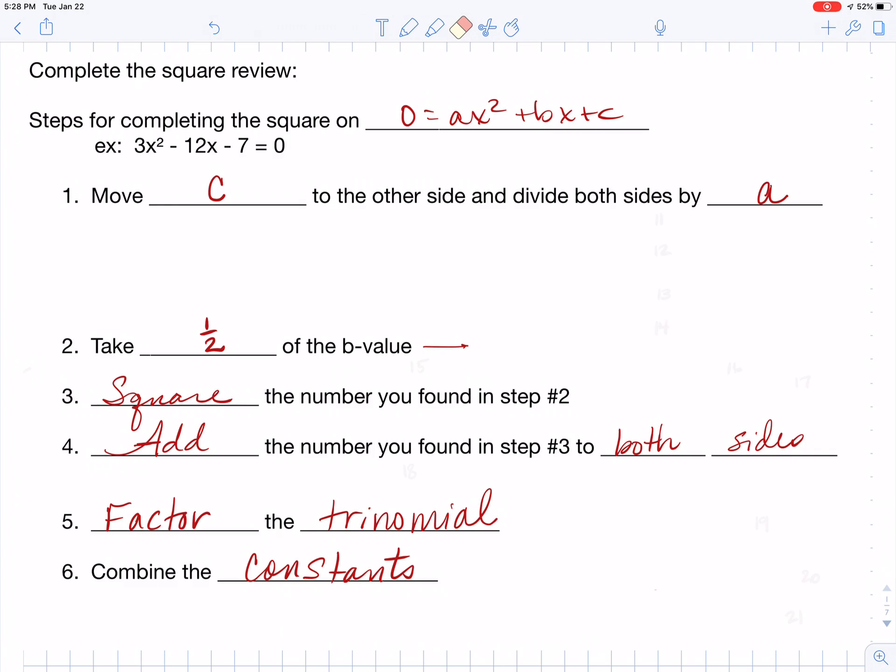Notice that I have an example at the top of the screen. 3x squared minus 12x minus 7 is equal to 0. So the first thing that we're going to do is we're going to move c to the other side. So my 7 gets moved to the other side by addition. And then what we're going to do is we're going to take that equation and divide on both sides by our a. So we're getting rid of that a.